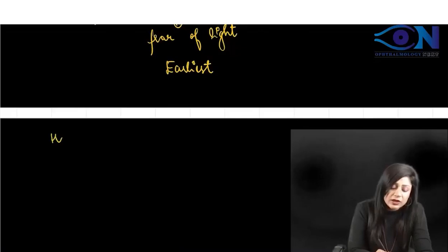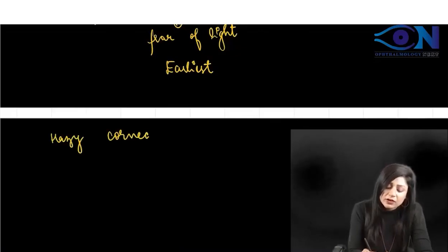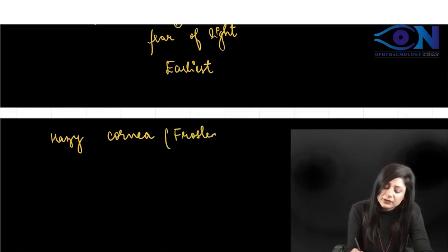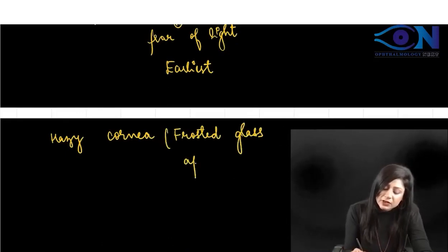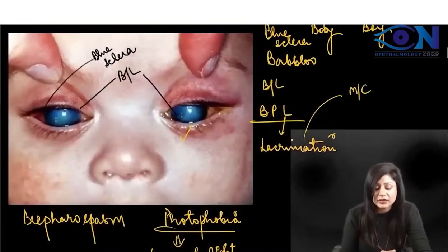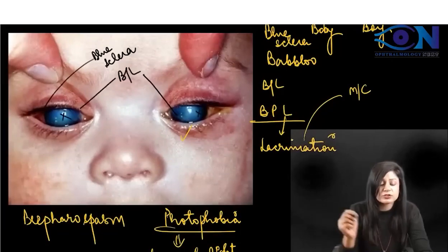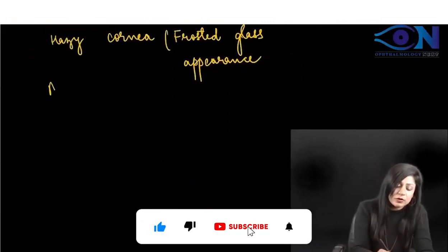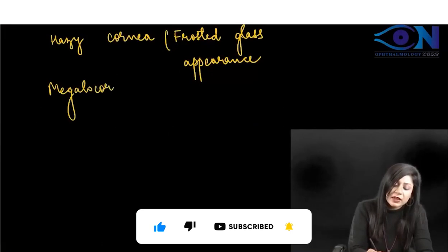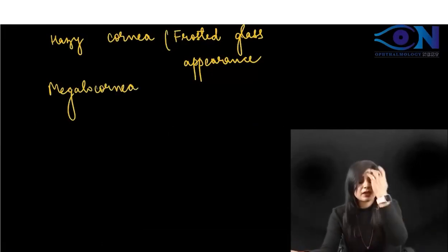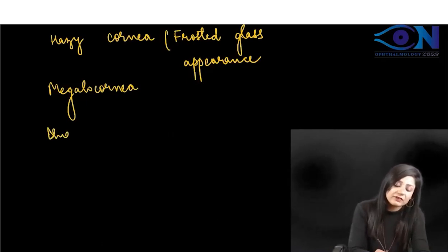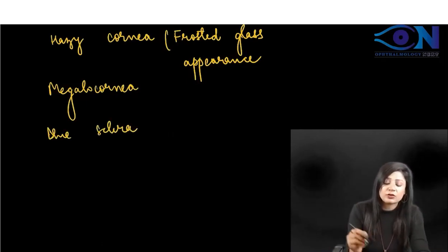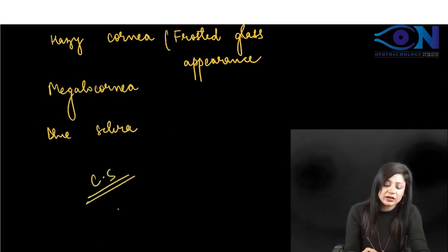We can also have a hazy cornea — this is called the frosted glass appearance. Even if it's not given in the question, you can appreciate this from the picture: the iris details will not be clear. This baby can also present with megalocornea. So BPL card, frosted glass appearance, megalocornea, and blue sclera are very typical of buphthalmos. This whole clinical scenario is a very important previous year question.